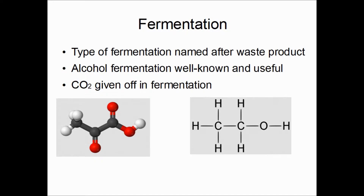In these two diagrams, we've got pyruvate on the left and ethanol alcohol on the right. The pyruvate has three carbon atoms and three oxygen atoms. If you count the oxygen and carbon in the ethanol, we've lost a carbon and two oxygens because alcohol fermentation also gives off CO2, or carbon dioxide. This is how, for example, the yeast in bread is able to make the bread rise.